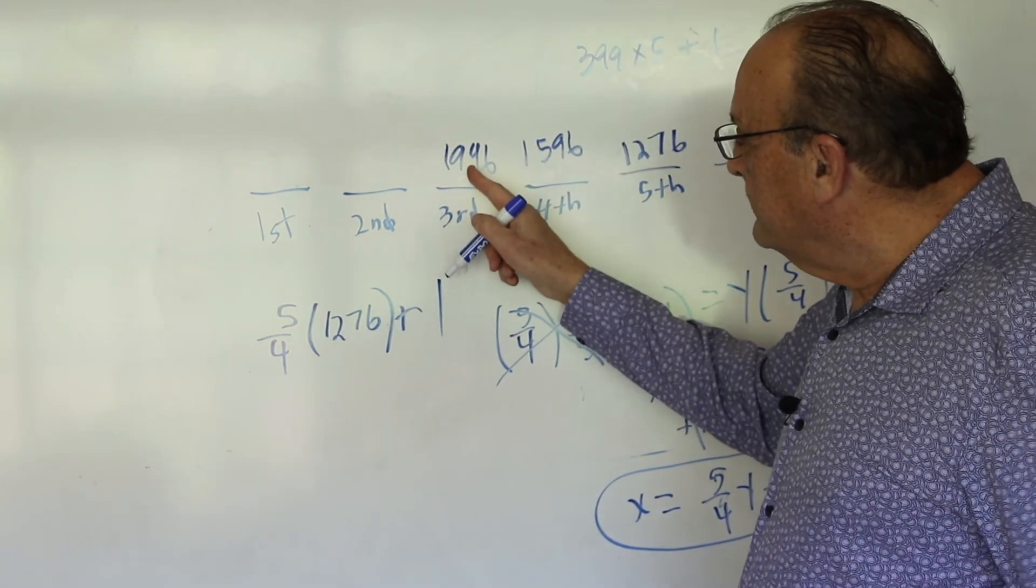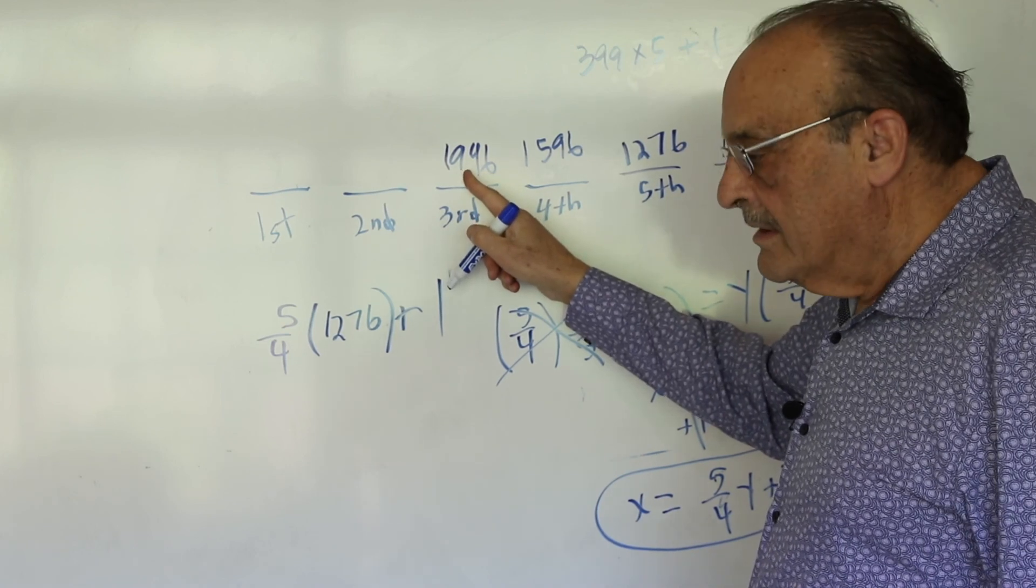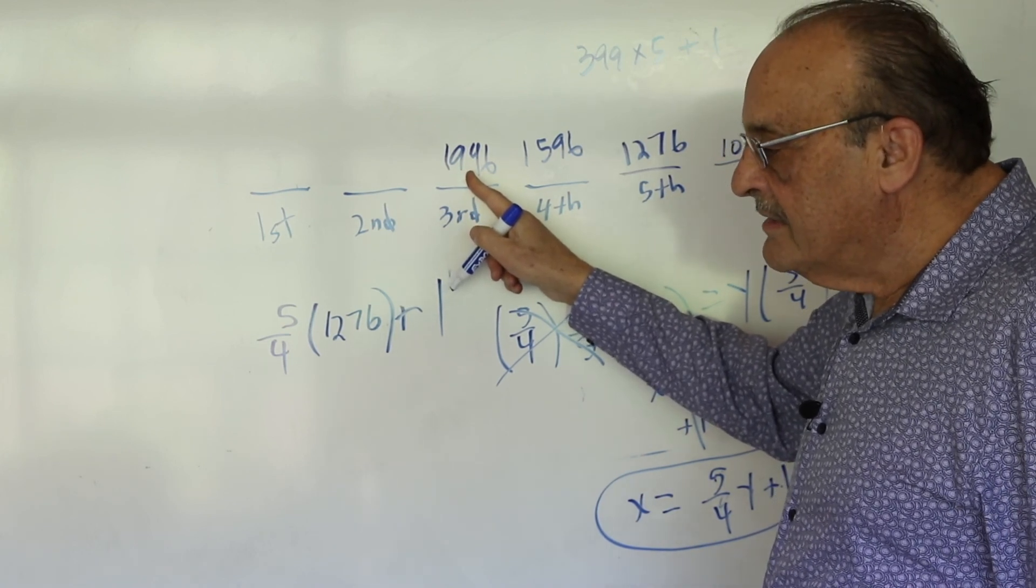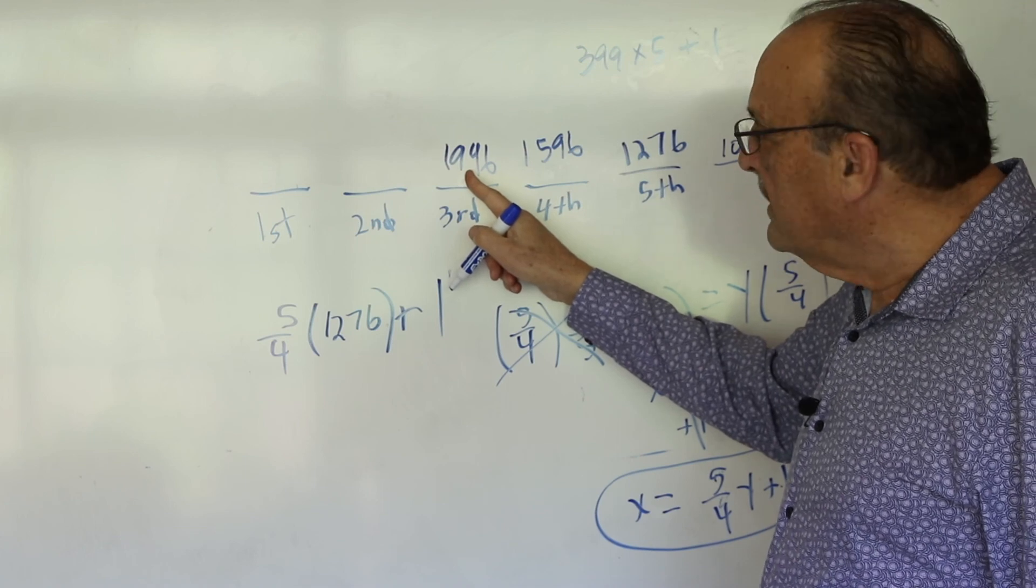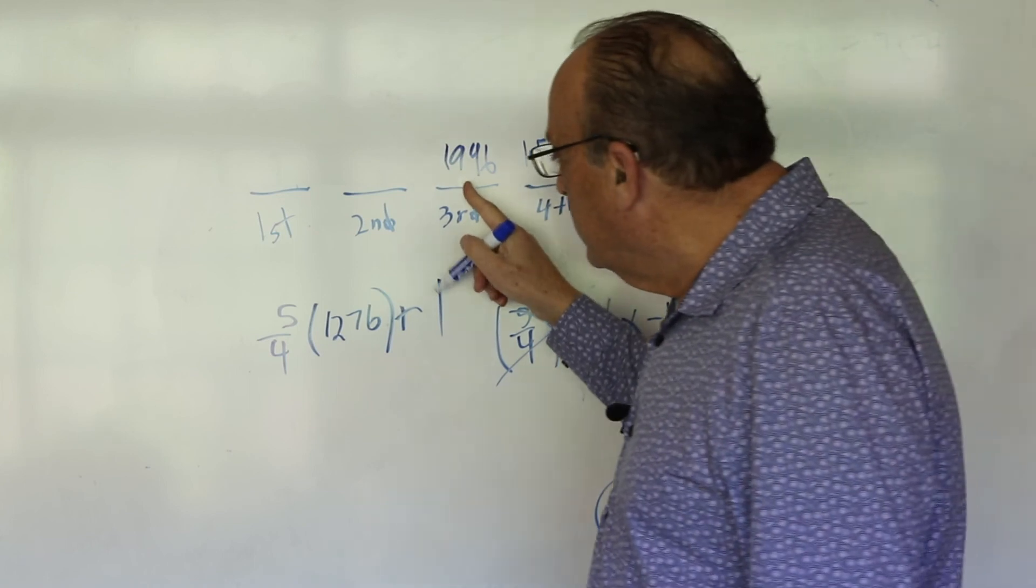So we divide this by 4. We get 499. 499 times 5 is 2495. Add 1 is 2496.